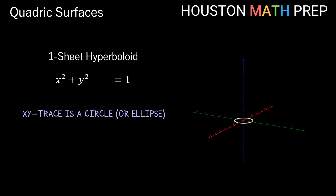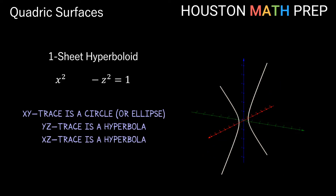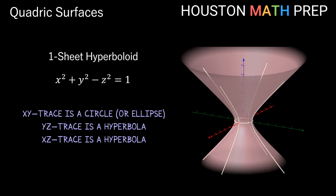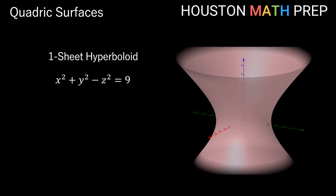Setting x = 0 for the yz trace gives quadratic terms with opposite signs — that indicates a hyperbola. Similarly, setting y = 0 for the xz trace gives a hyperbola in terms of x and z. All traces combined give a clear picture of the one-sheet hyperboloid: a wormhole-looking object with a nice hourglass shape. Since the z² term is negative, the z-axis is the axis of symmetry running through the center. With a wider center, these surfaces resemble cooling towers for nuclear power plants.